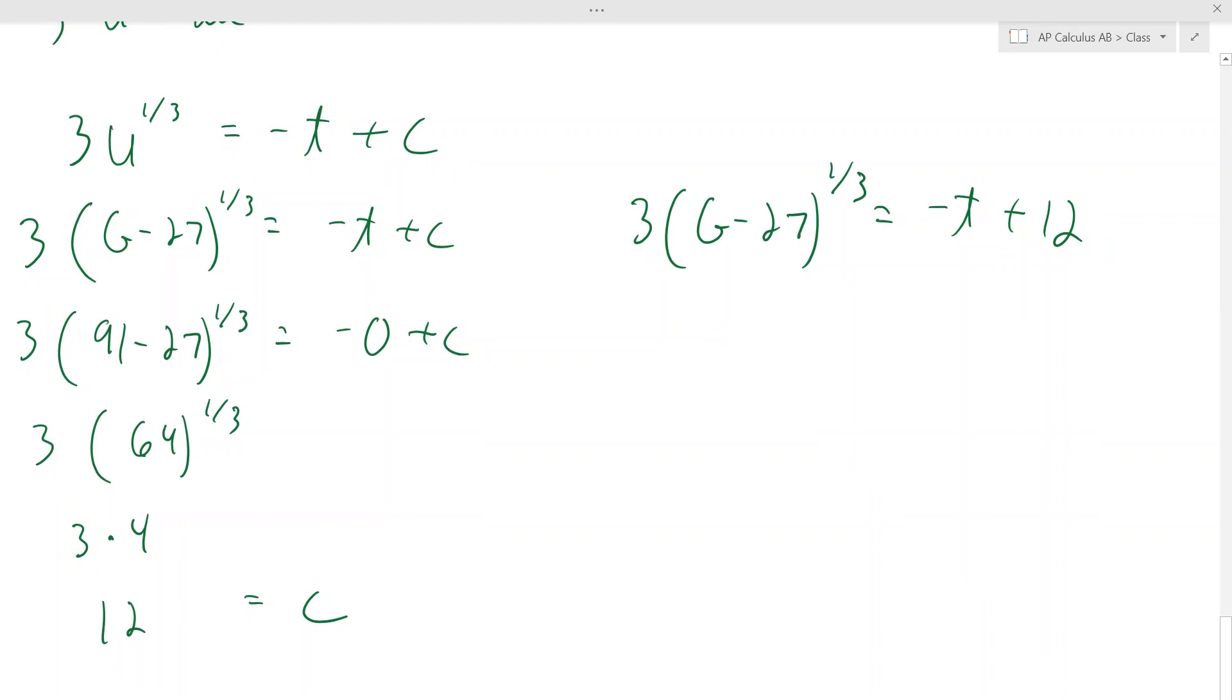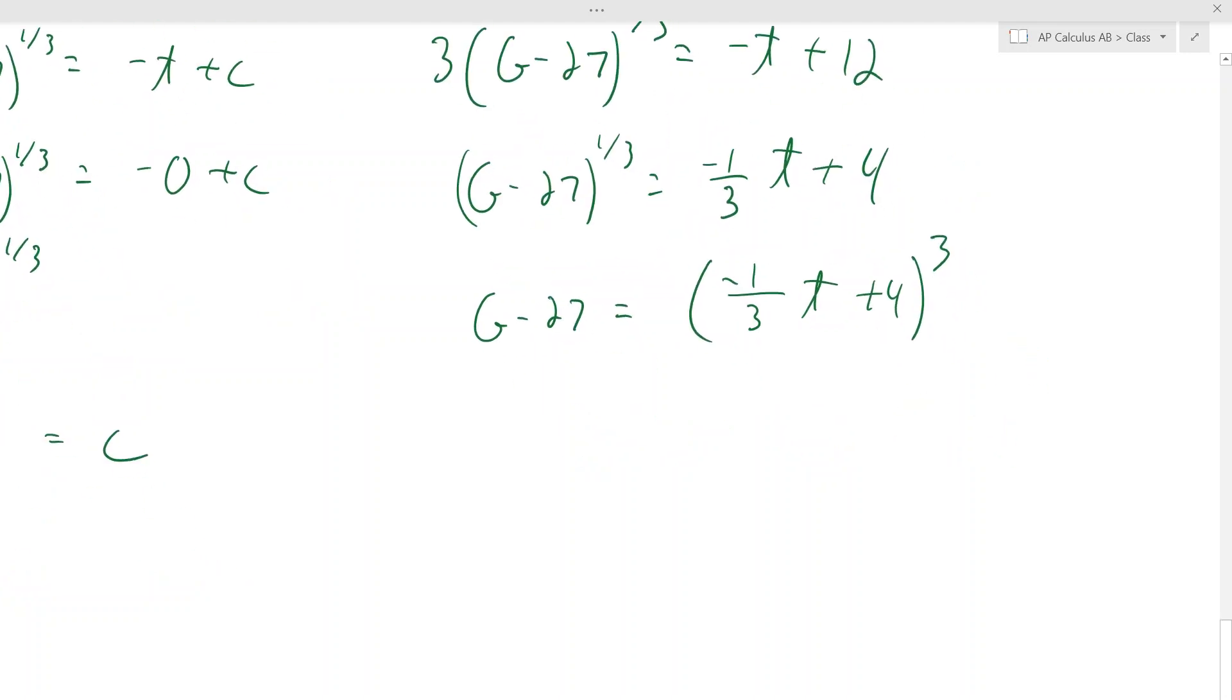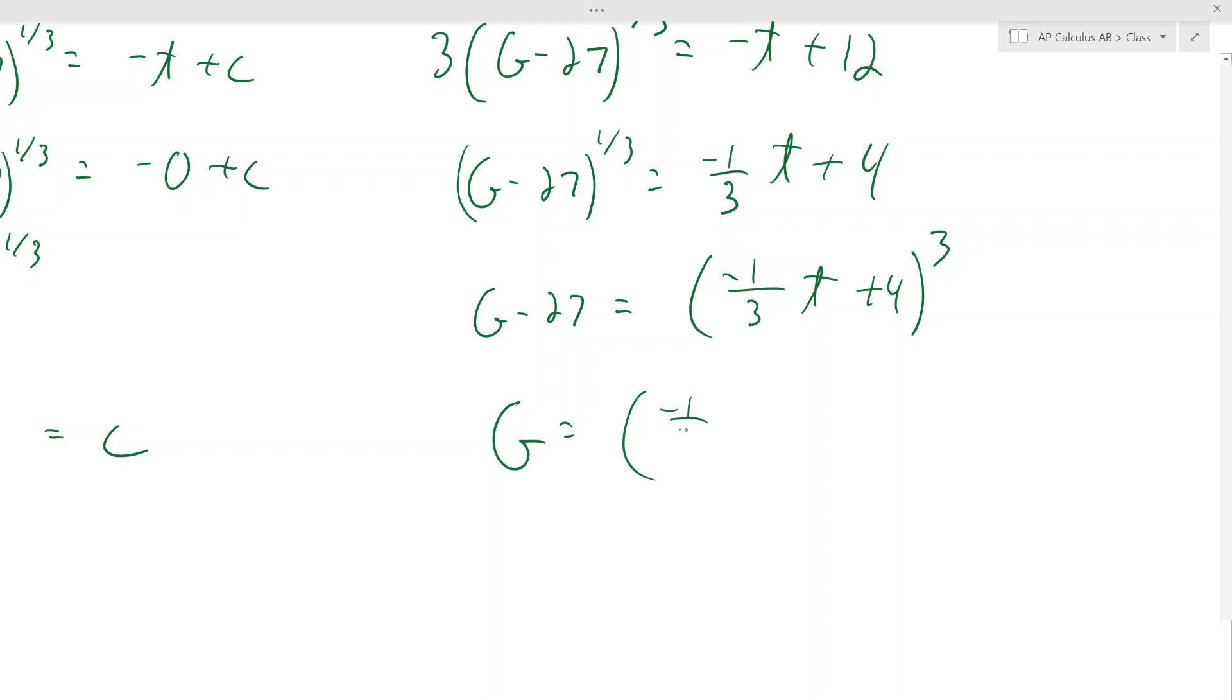And then he wants to solve for G. So they say, what's G of t? So you got to get G by itself. So we're going to divide by three. So that's going to give you this. So follow the order here. So it's negative one third t plus four. Then we're going to cube both sides and you're cubing the whole side. So you got to put it in parentheses. So it's negative one third t plus four cubed. And then you're adding 27 over to that. So that's our model for G of t.